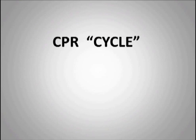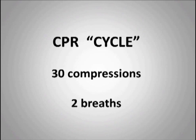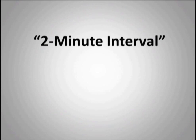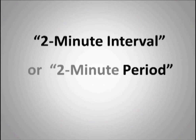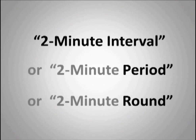A CPR cycle is 30 compressions and two breaths. Five cycles comprise a two-minute interval. We'll use this term — you might also hear 'two-minute period' or 'two-minute round.' Keep in mind that a cycle and a two-minute interval are two different components of the BLS-ACLS framework.